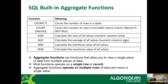SUM just adds up all the numeric values in a column. AVG, MIN, and MAX — you know what averages are. MIN and MAX are self-explanatory: they figure out the minimum and maximum values. The functions are pretty clear.